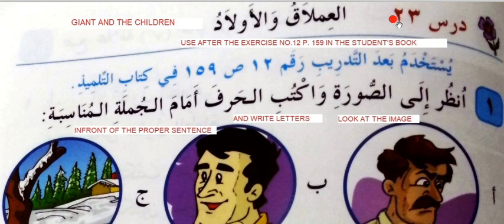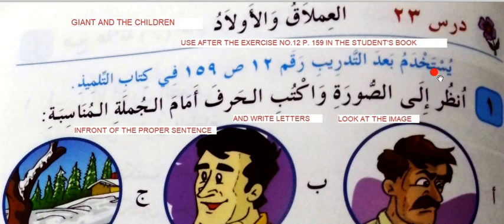Imlaq means giant. Aulad means children. Walad means child or boy, and aulad is the plural of walad. Al-imlaq is the proper noun with the definite article al-, so it means 'the giant.' The title is 'The Giant and the Children.' Yes, daqdaq — use badal tadrib as I told you before.